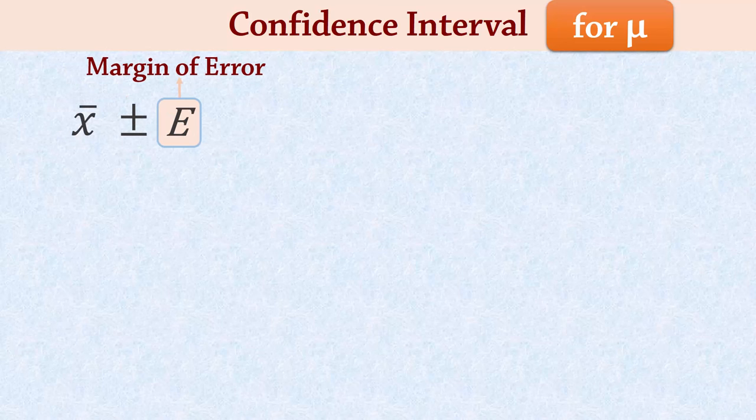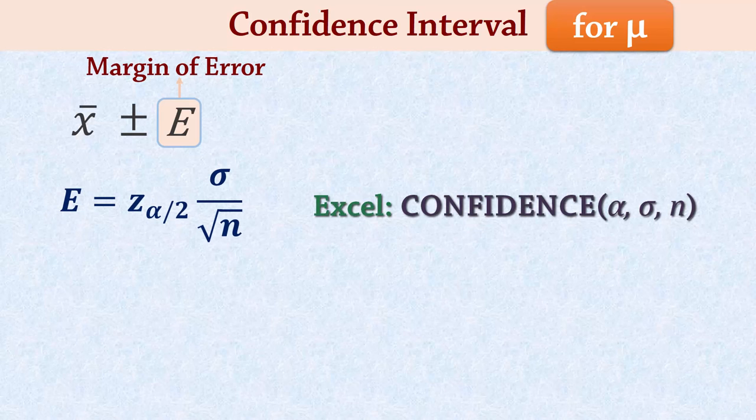If the population standard deviation is known, the margin of error is determined by Z alpha over 2 times sigma over square root of n.